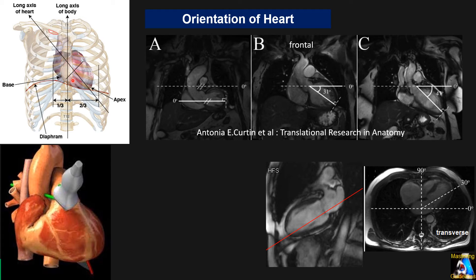The orientation of the heart depends on the contents of the abdomen, because whatever is inside the abdomen pushes the diaphragm and can change the orientation of the heart, as well as the structure of the chest wall, especially the vertebra. Generally speaking, the heart orientation — just for memorizing, since each patient will be different — is approximately 30 to 35 degrees in the frontal and sagittal planes. The orientation of the long axis of the heart will change depending on those parameters.